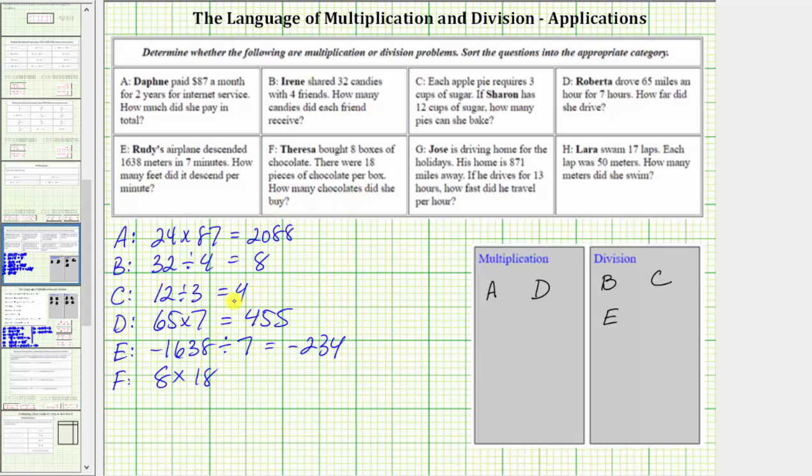Eight times 18 equals 144. We use multiplication. We place F in the multiplication box.